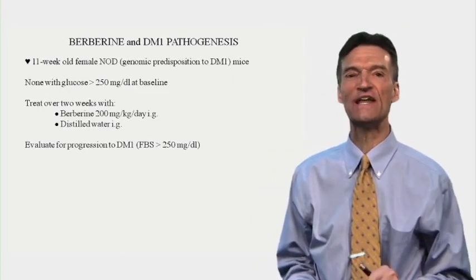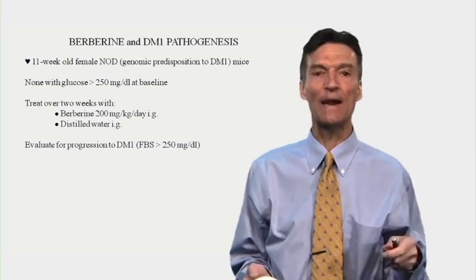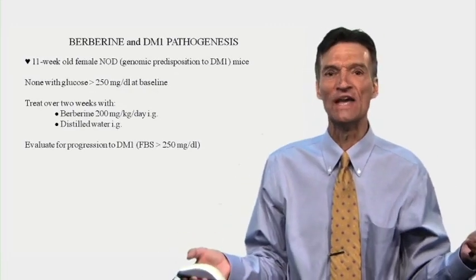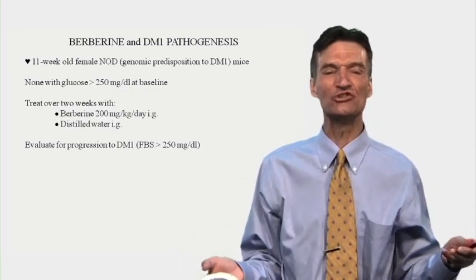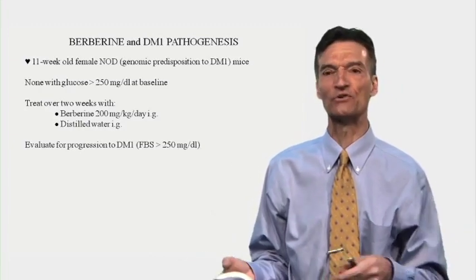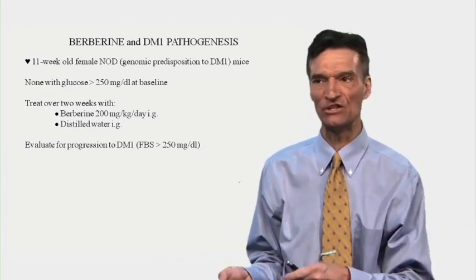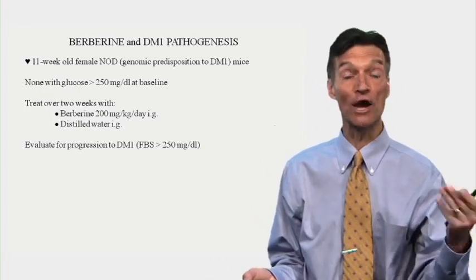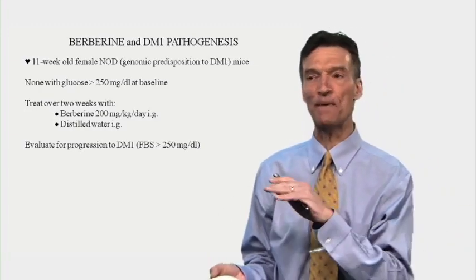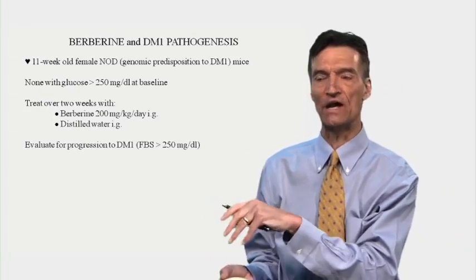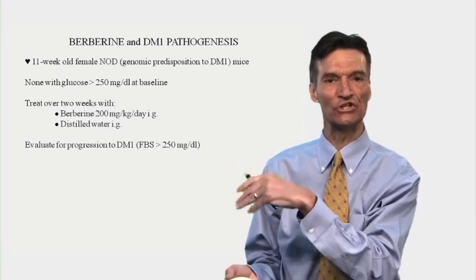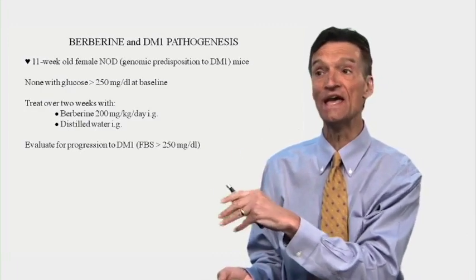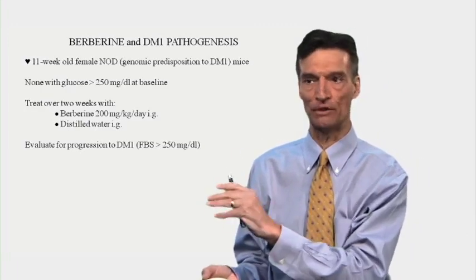Let's look at berberine and type 1 diabetes pathogenesis. Type 2 diabetes, which is what 90% of our patients have, is insulin insensitivity — the pancreas is making plenty of insulin. Type 1 or juvenile diabetes means the pancreas has been damaged: the islet cells that generate insulin are dysfunctional or dead, and you suffer from lack of insulin.